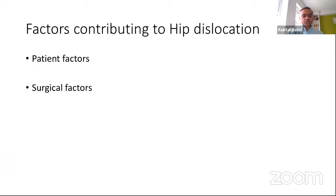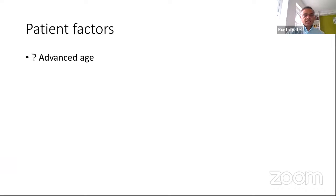I would divide the contributing factors into patient factors and surgical factors. Regarding patient factors: advanced age contributes, but it's not just age in itself — it's things like dementia, compliance issues, and general frailty. Hip range of motion is also a factor; people who are very active and want to return to sporting activities like skiing can contribute to hip dislocation.